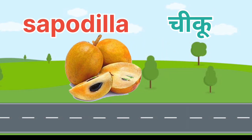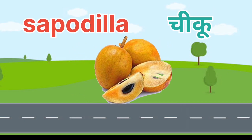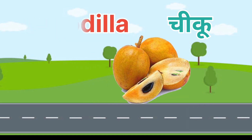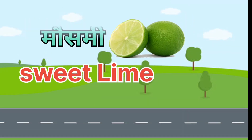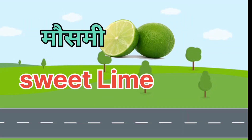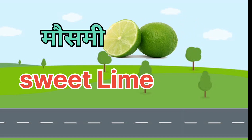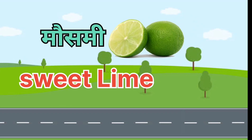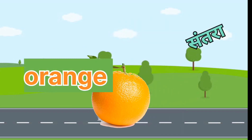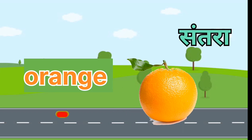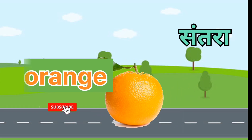Sapodilla. Sapodilla means Jiku. Sweet lime. Sweet lime means Mossmi. Orange. Orange means Santra.